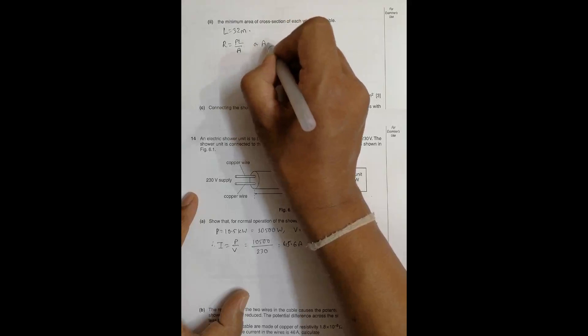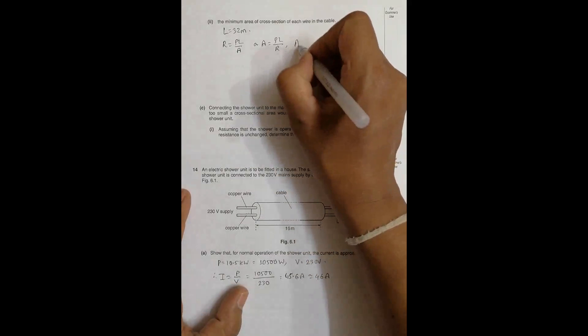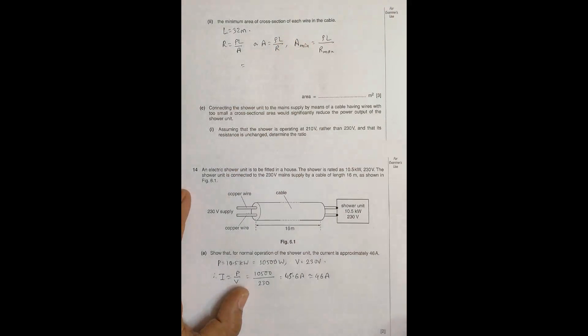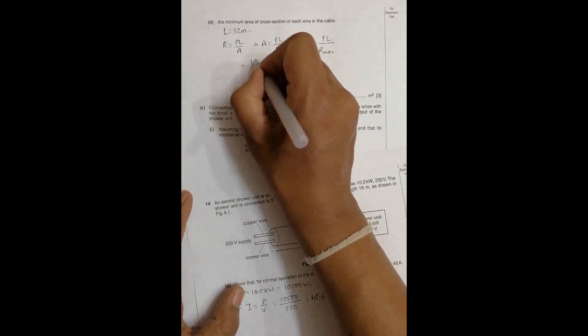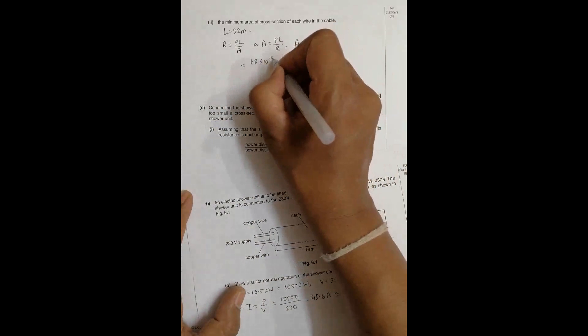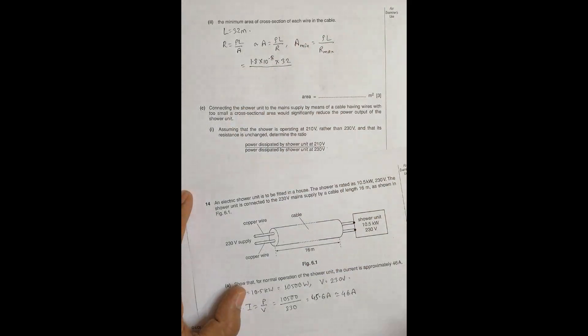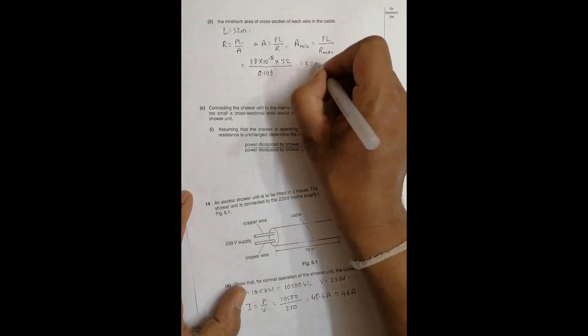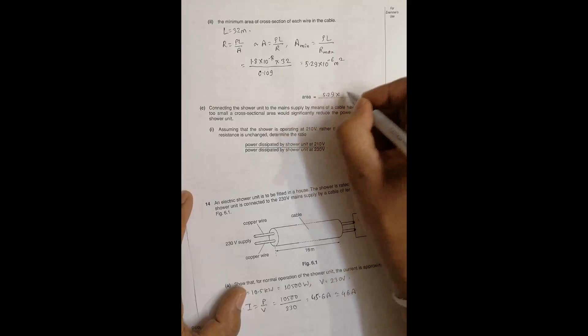We have R equals ρL by A, so A equals ρL by R. Since R equals R max, A will be the minimum area. So A minimum equals ρL by R max. That's equal to the resistivity ρ, which is 1.8 into 10 power minus 8 ohm meter, into length 32 meters, divided by resistance 0.109. This whole equals 5.29 into 10 to the power minus 6 meter square.